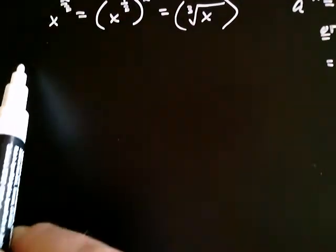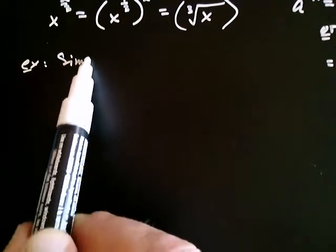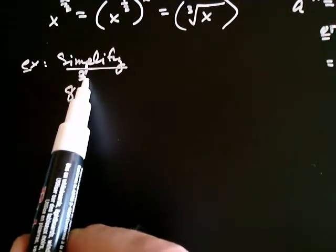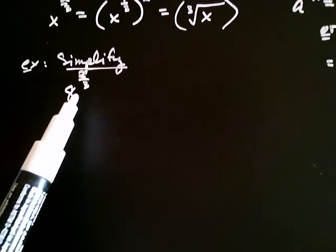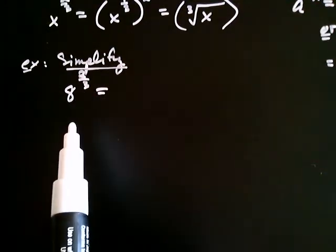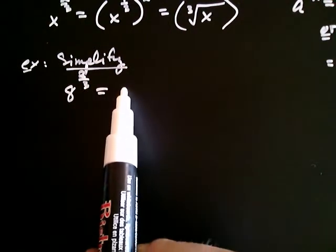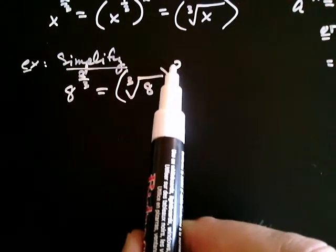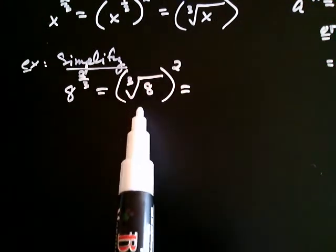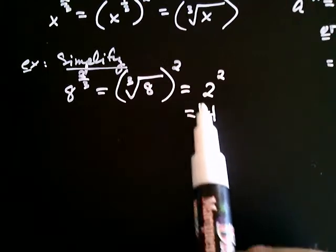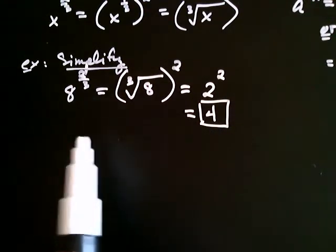Let's see an example. Let's simplify 8 raised to the 2 over 3. I see two things going on: a numerator — that's going to be a power — and a denominator — that's going to be an index. I'm going to first deal with the denominator, using the 3 as an index. So I first take the third root of 8, and then square the result. The cube root of 8 is 2, and 2 squared is 4. So 8 raised to the 2 thirds equals 4.